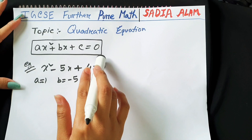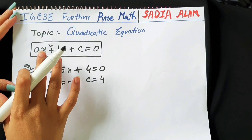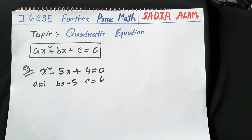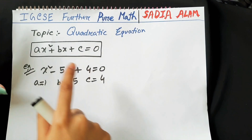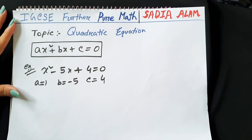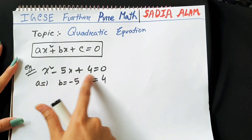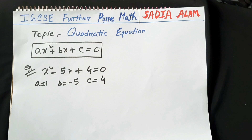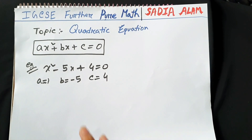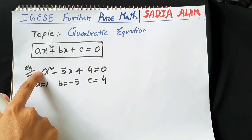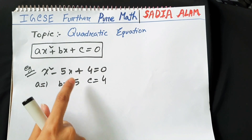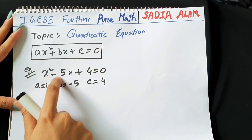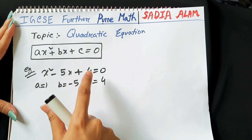Suppose this is a quadratic equation where the coefficient of x² is a, the coefficient of x is b, and the remaining term without any x or x² is c. For example, x² minus 5x plus 4 is a quadratic equation. We can find the values of a, b, and c from this equation. The coefficient of x² is 1. We need to include the sign too, so b is minus 5 and c is 4.